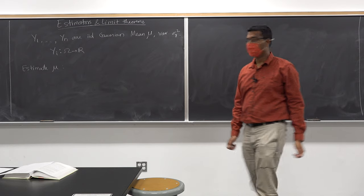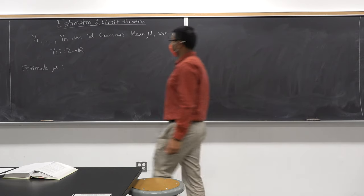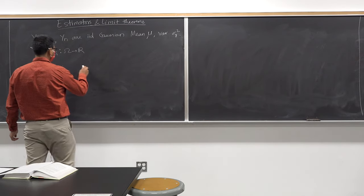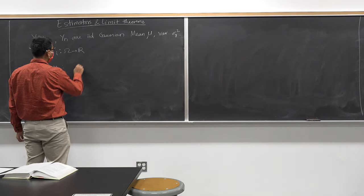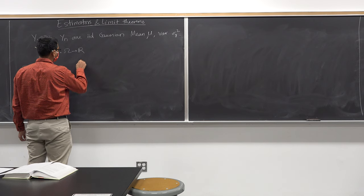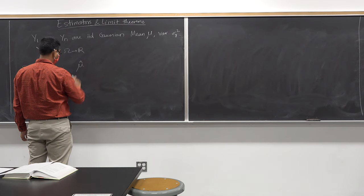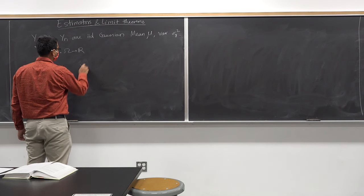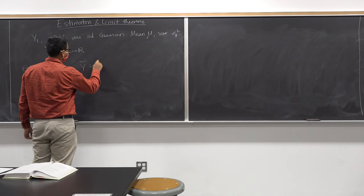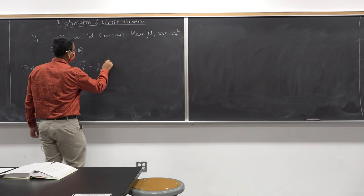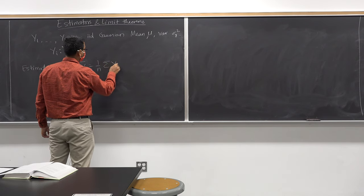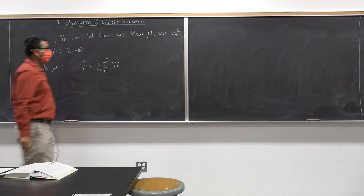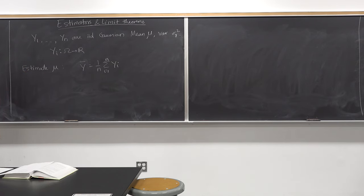Sum of those divided by n. So let me call it ȳ = (1/n) Σ yi, for i equals 1 to n.